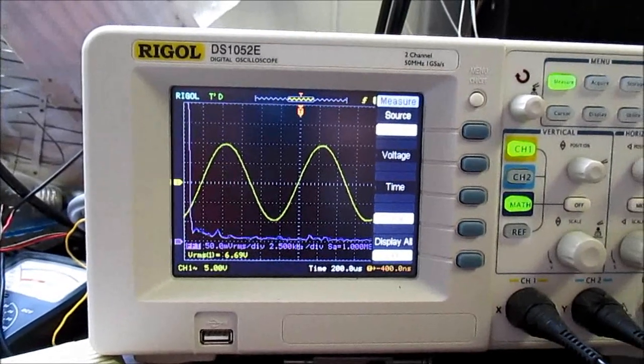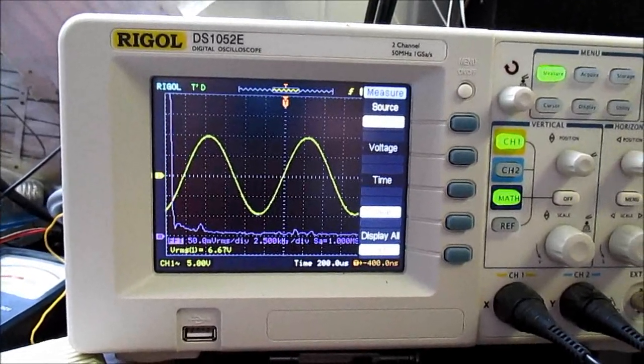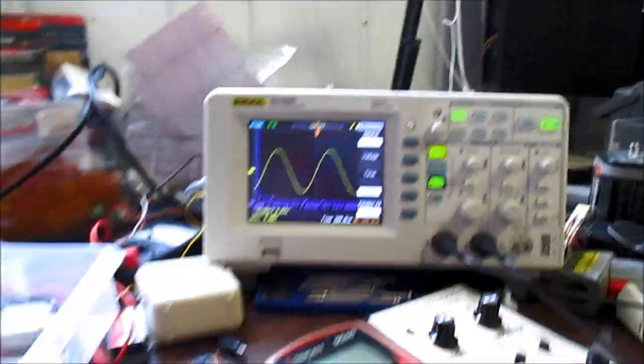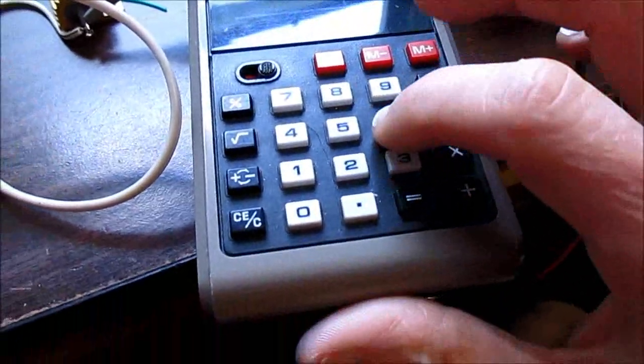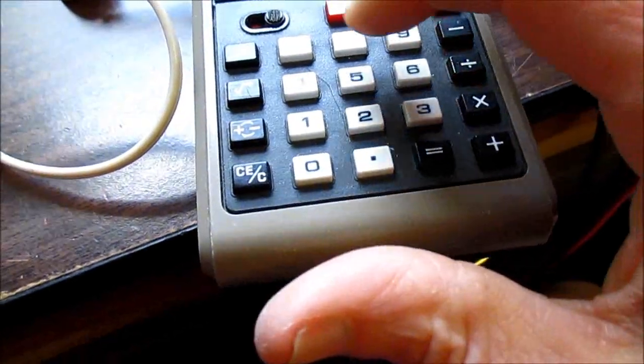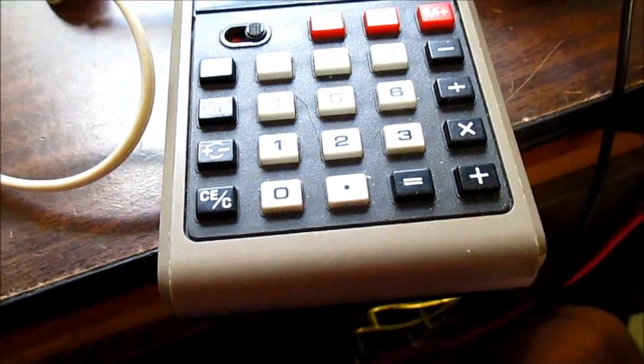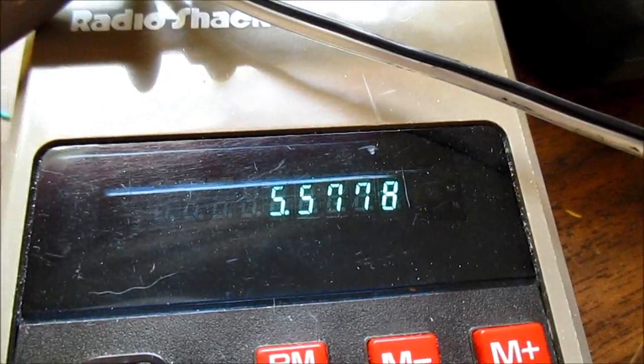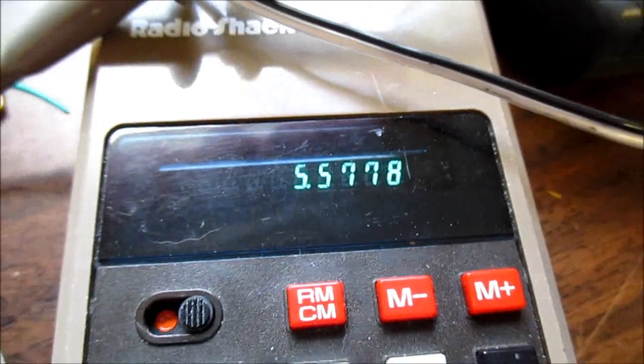And we'll use that. 6.68 volts. 6.68 squared divided by the load impedance of 8 ohms, and it gives a lovely 5.57, about 5.6 watts.